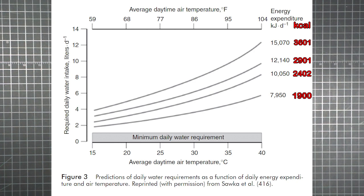Remember that one capital C food calorie is the equivalent of 1000 thermodynamic calories or one kilocalorie. So according to the graph, if you burn 2400 calories on a 77 degree day, you'll need a minimum of four liters of water to replenish losses.